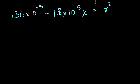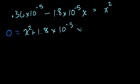Let's put everything on the same side of the equation. So you get, I'm going to move all of these to the right hand side. So you get 0 is equal to x squared. Add this to both sides of the equation. Plus 1.8 times 10 to the minus 5x.